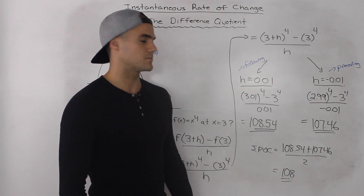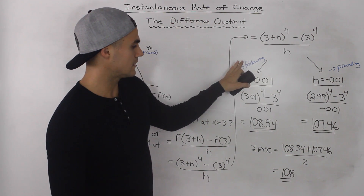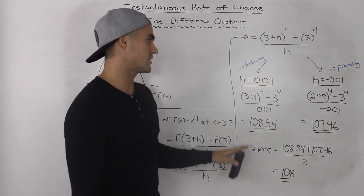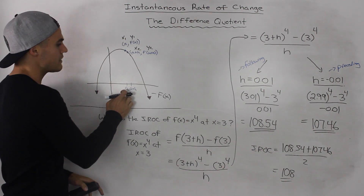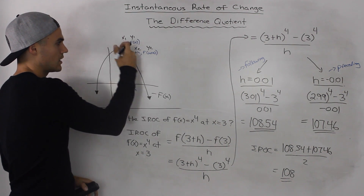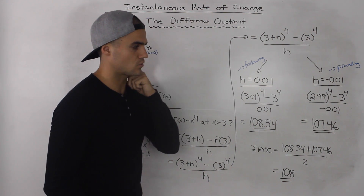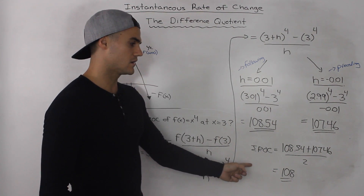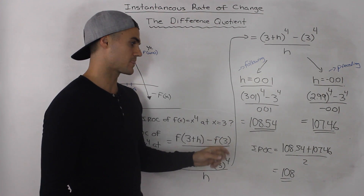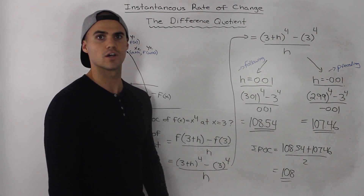To get a better approximation, let's average them out, as we've been doing with the preceding and following interval method. Adding these two and dividing by 2, we get an approximation of 108. Keep in mind that doing it this way we're still only approximating the instantaneous rate of change, picking points very close to the a value. However, with the difference quotient there is a way to find the actual instantaneous rate of change using an algebraic method that we'll go over in future videos.